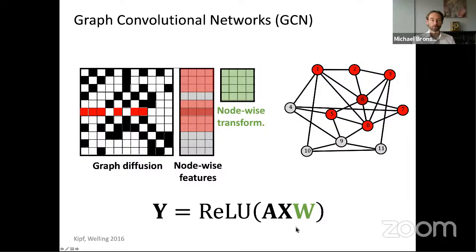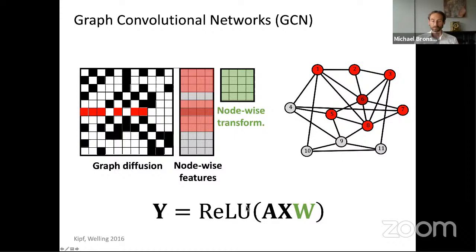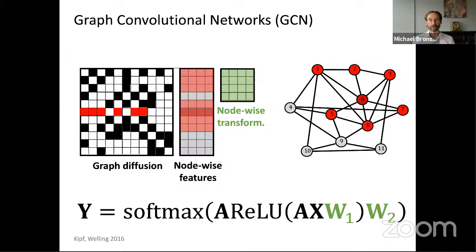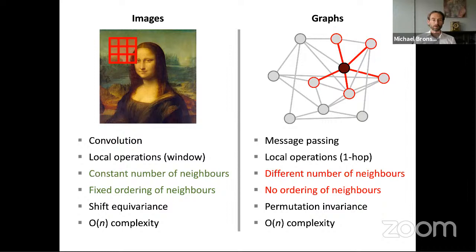For a deeper neural network, you just concatenate multiple such layers. In this example, a two-layer neural network allows node-wise classification on the graph. Comparing images to graphs, in both cases we have convolutional-like operations that are local: for images the operation is defined in a window, for graphs in one neighborhood. The structures are rather different, but in both cases these operations have linear complexity.